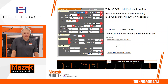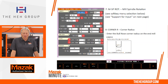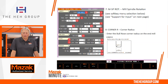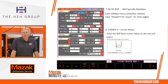Number seven is going to be your mill spindle rotation. You're going to see soft keys for counterclockwise, clockwise, and angle counterclockwise. There are some tool holders out there that have a gear mechanism where it has to run in reverse to run forward — that's where the angle holder comes into play. If you have a Mazak milling head, they'll have a sticker on there that says ANG on it to help identify that holder.